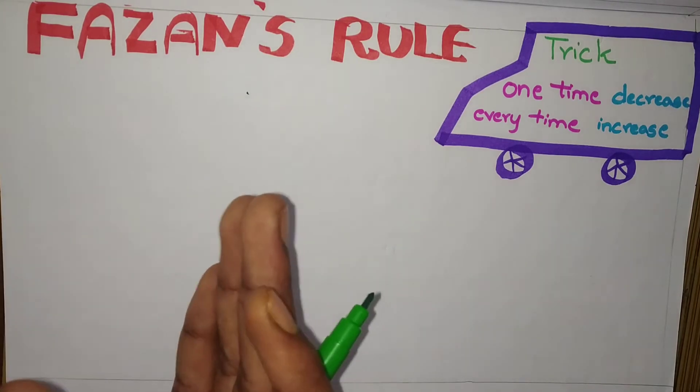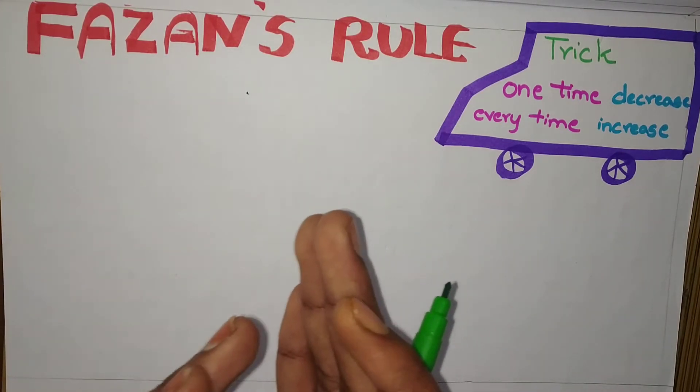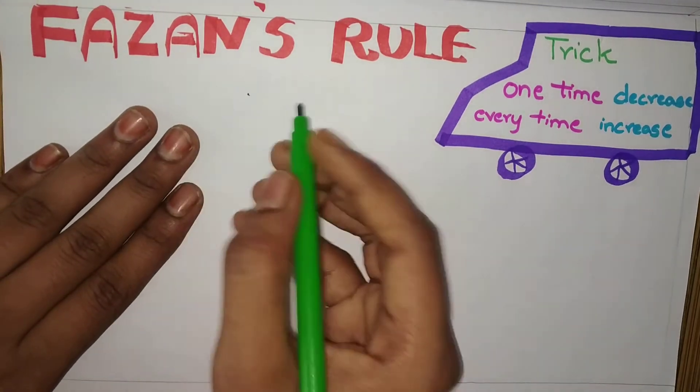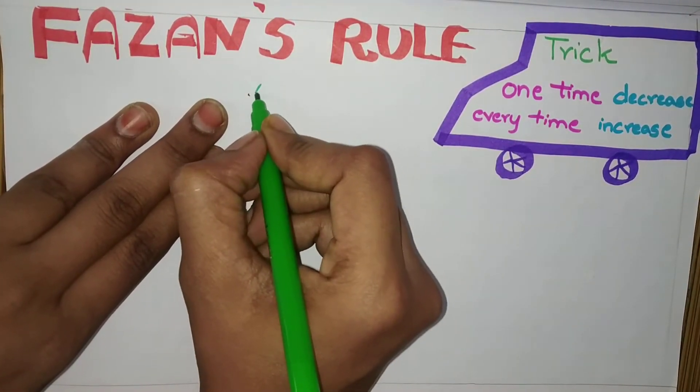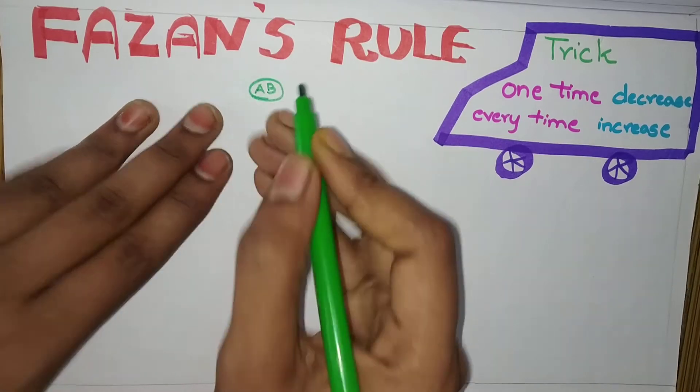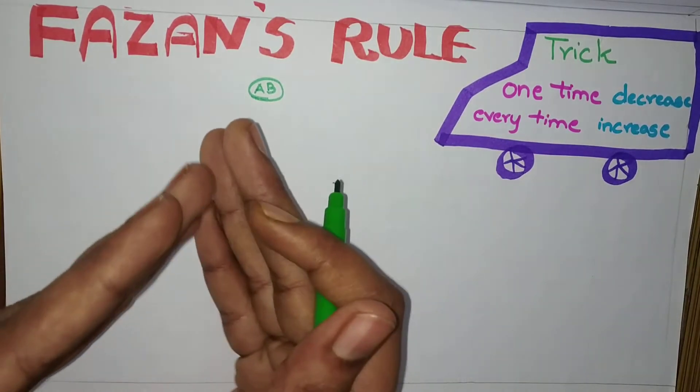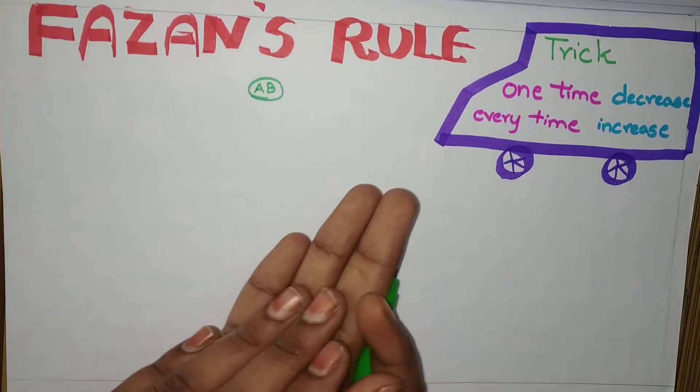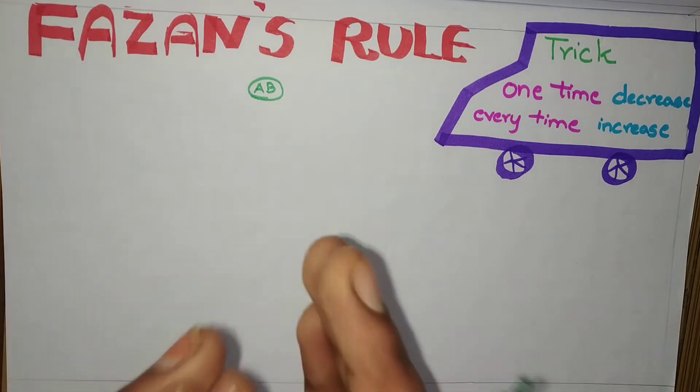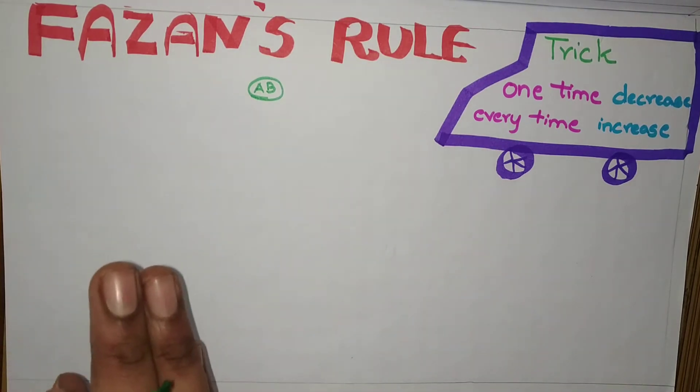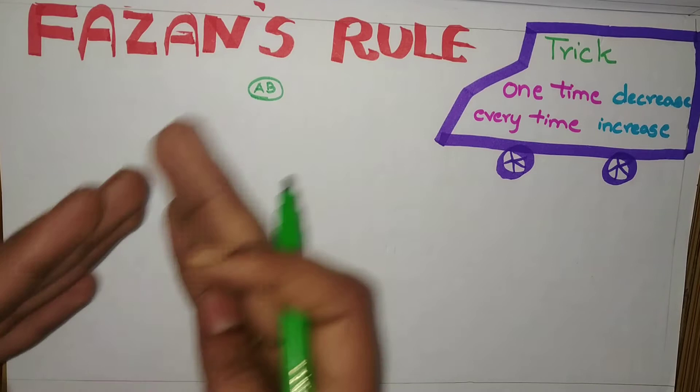Fazan's rule talks about covalent character. Suppose a compound is given, let's say AB. In this compound, there will be covalent character and ionic character. How to find that covalent character? For that, we use Fazan's rule.